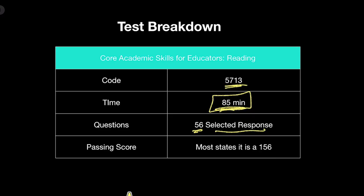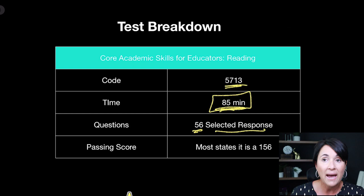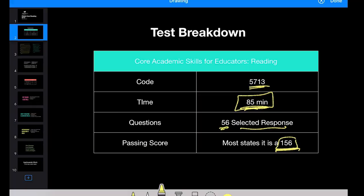In terms of a passing score, most states want a 156. It all depends on your state, so you need to make sure you're going by what your state says. But for the most part, your state sets your score. Everybody's different, but 156 is pretty much the standard.